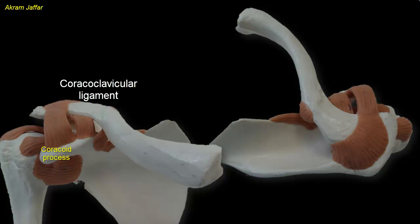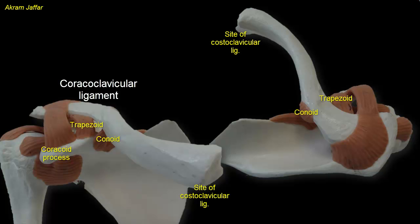The ligaments are named according to their shape. The conical one is the conoid ligament, and the other is the trapezoid ligament because it is trapezoid in shape. Similarly, the costoclavicular ligament is also called the rhomboid ligament because of its rhomboid form.